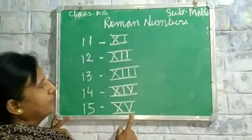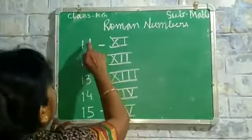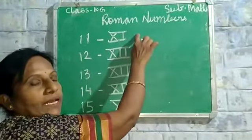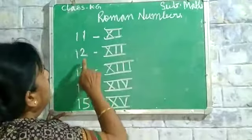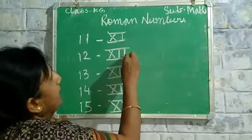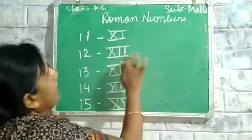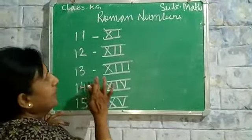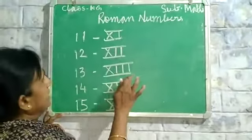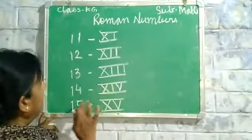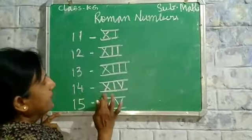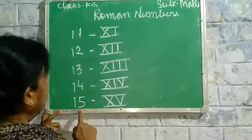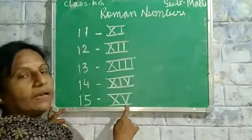15 is X and V. Let me review: 11 is X and I, 12 is X, I, I, 13 is X, I, I, I, 14 is X, I, V — and this is the Roman number for 14. 15 is X and V. What is that?